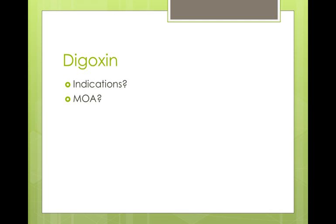What digoxin does is slow conduction through the AV node. We use it to, what I call, protect the ventricles when somebody has atrial fibrillation. If the electrical activity is going crazy in the atrium, you can live with that. But what you can't live with is if that crazy electrical activity transfers to the ventricles. By slowing conduction through the AV node, you protect the ventricles from that ventricular crazy activity. Those are the two uses, and we'll find out soon that there are two different therapeutic ranges.